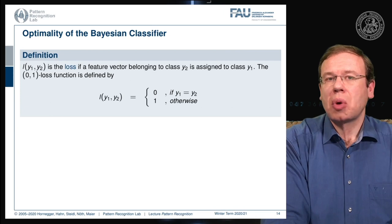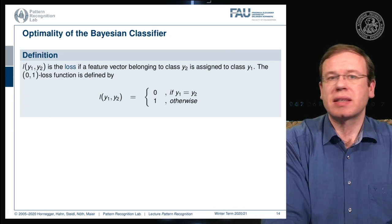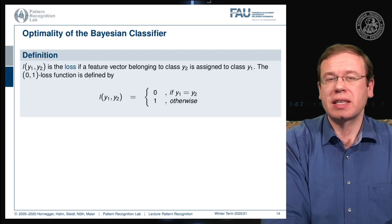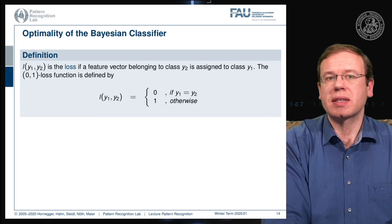So the most frequently used example here is the zero-one loss function and this essentially says you have a loss of one if you do a misclassification. It means that you treat all misclassifications equally and they have the same cost and the correct classifications essentially have a cost of zero.